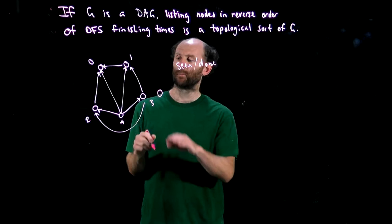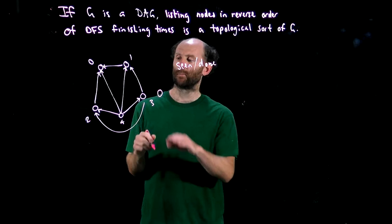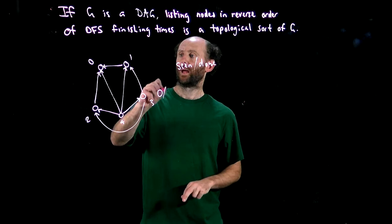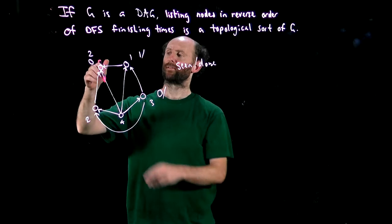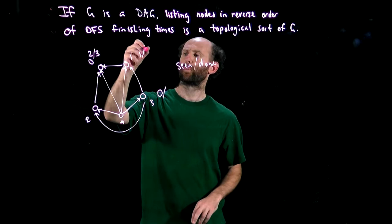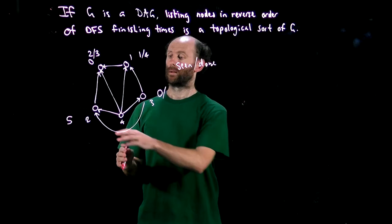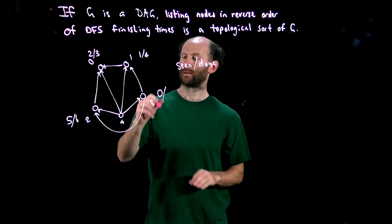So we have a scene time of three, then we visit our out-neighbor let's say one, and from one we'll visit its only out-neighbor zero. Zero has no out-neighbors so we'll finish with that, then we'll finish with one. We'll go to the other out-neighbor of three; that's got no more white out-neighbors so we'll finish with that, and finally we've finished with three.